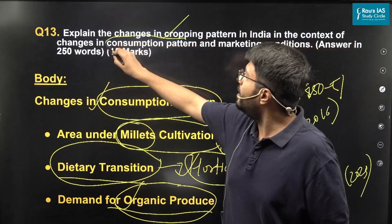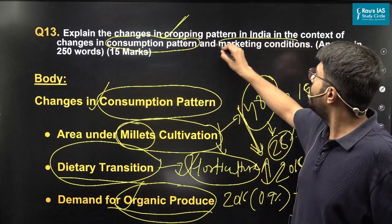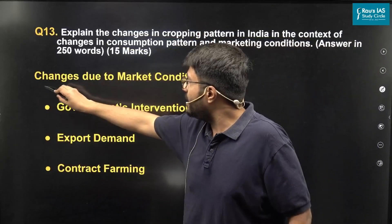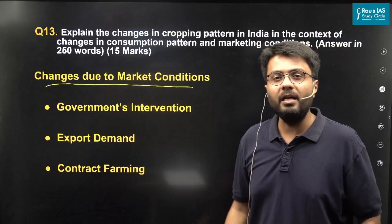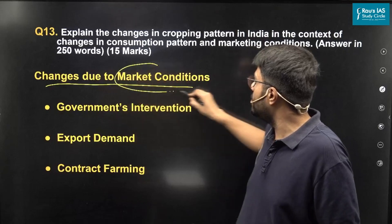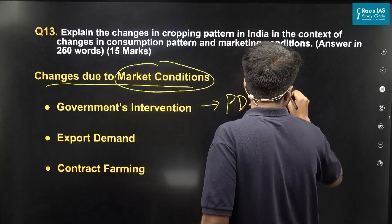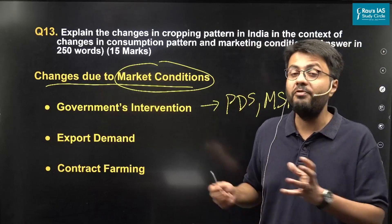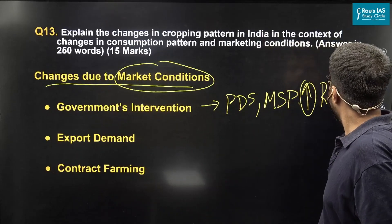After understanding the effect of consumption pattern on cropping patterns, we will now discuss what kind of effect marketing conditions have. There are many different changes that highlight changes in marketing conditions. Most important is the role that the government — both central and state — plays in marketing of agricultural produce. Due to the PDS scheme as well as procurement under the MSP program, the government favors procurement of both rice and wheat, resulting in a change in cultivation of these crops in the country.